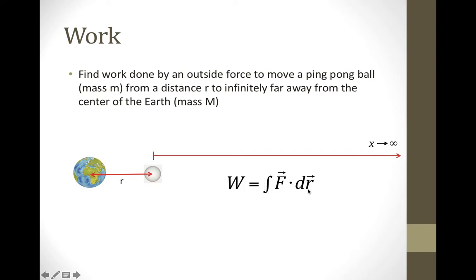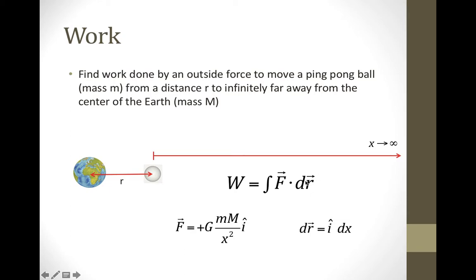We're going to integrate F dot dr, where F follows Newton's law of gravity. We'll be applying a force that is always equal and exactly opposite to the force of gravity, which follows this inverse square law. We'll treat this as a vector, radially outward along the x-axis, going directly out from the center of the Earth. It's positive because we're pushing the ping-pong ball away, and dr will be a little increment of distance along the x-axis, so it'll be i times dx.